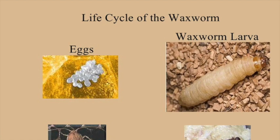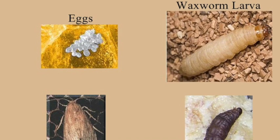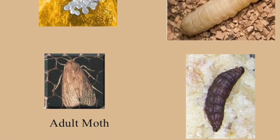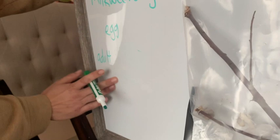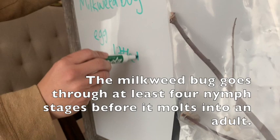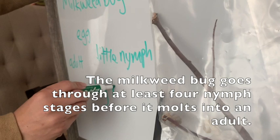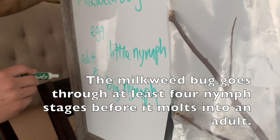Wait a second — that waxworm larvae and pupae doesn't look anything like those milkweed bugs in the bag. What's going on? The last time we checked, they weren't larvae or pupae because this was one of those types of insects that has a different life cycle, as little nymph and big nymph.